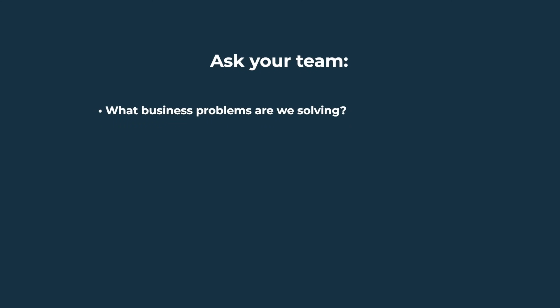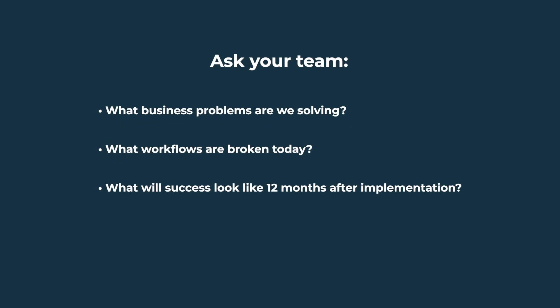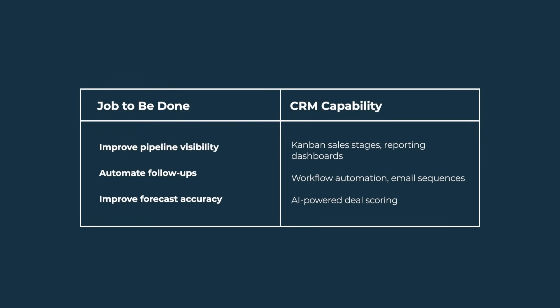Ask your team: what business problems are we solving? What workflows are broken today? What will success look like after 12 months? For example, we need better forecasting accuracy, or we have no visibility into where leads are dropping off. Then match each job with potential CRM capabilities — that will give you a clear set of questions when doing demos with vendors.